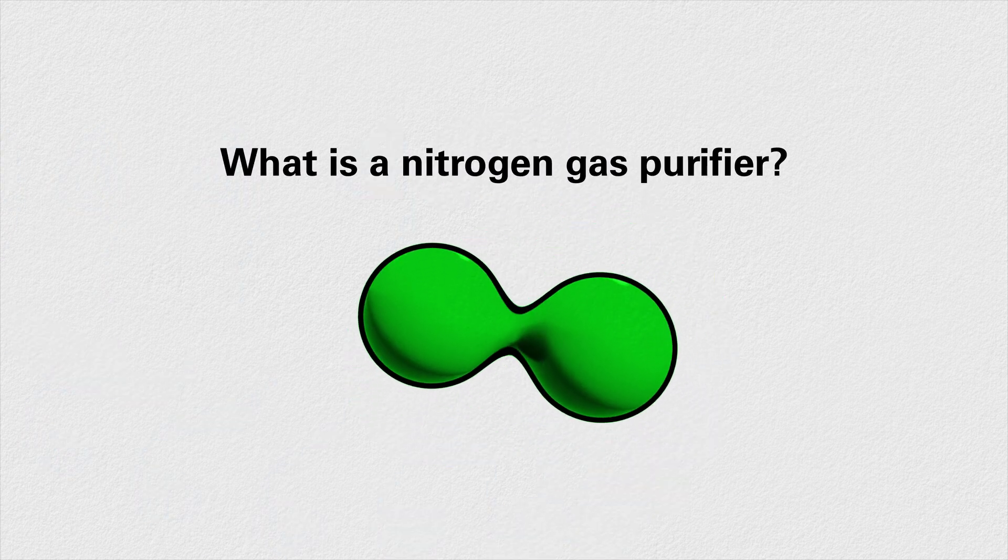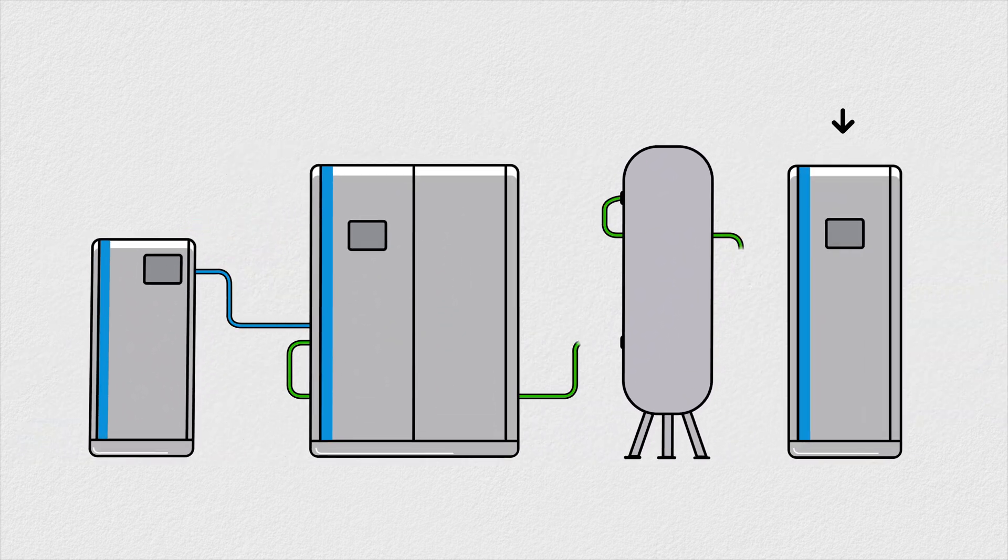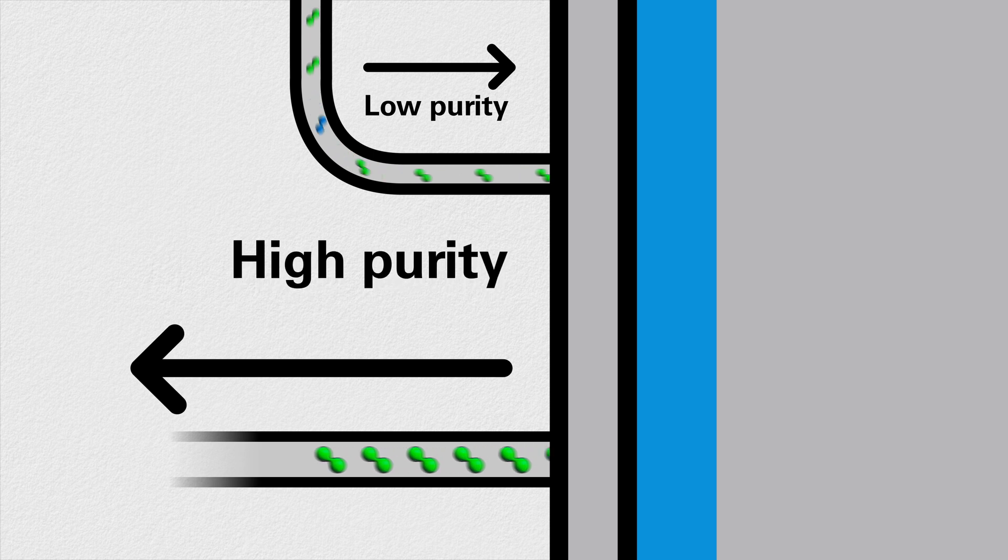What is a nitrogen gas purifier? A nitrogen gas purifier is a machine that operates as part of an on-site nitrogen generation system. It takes lower purity nitrogen produced by a nitrogen gas generator and boosts it to a purity of 99.999% or more.